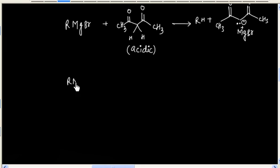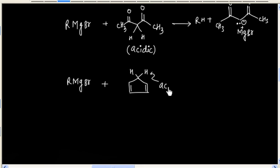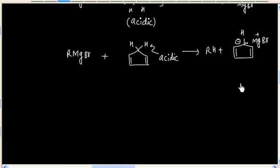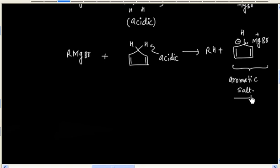Now what will be the product in this reaction? This hydrogen is acidic. If I remove this hydrogen, we will have an aromatic compound. So this becomes aromatic — basically we will have an aromatic salt. So the idea is whenever we have acidic hydrogen in one molecule, Grignard reagent will act as a base and we will have an acid-base reaction.